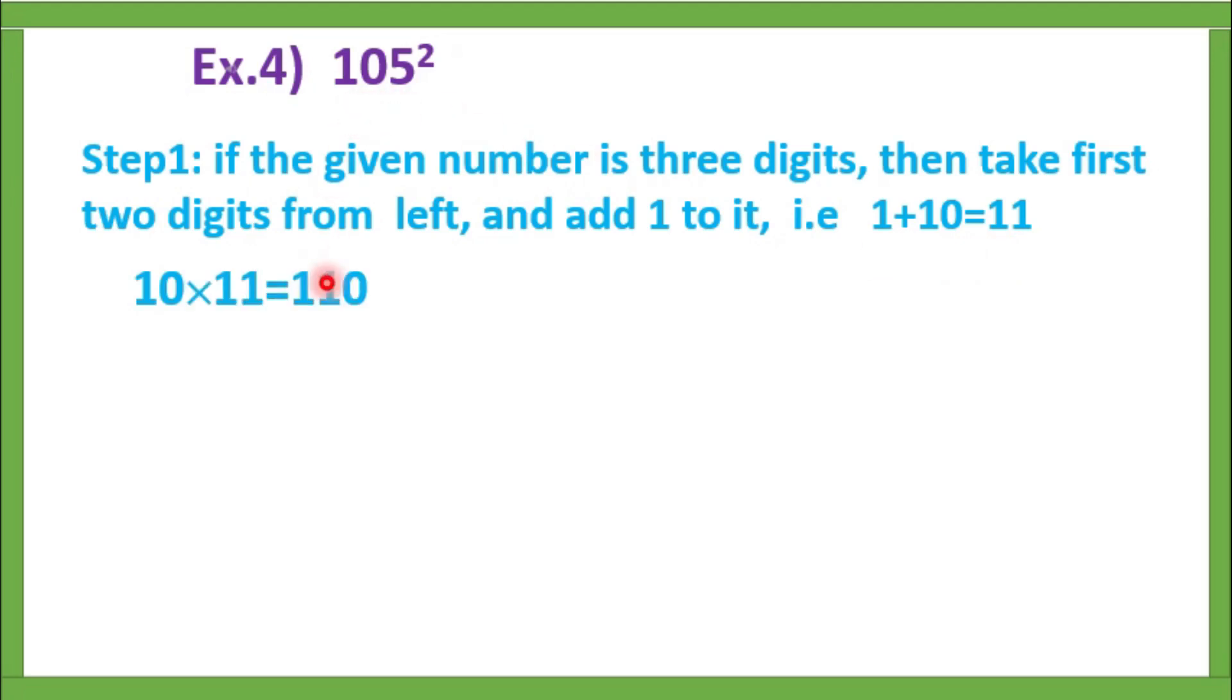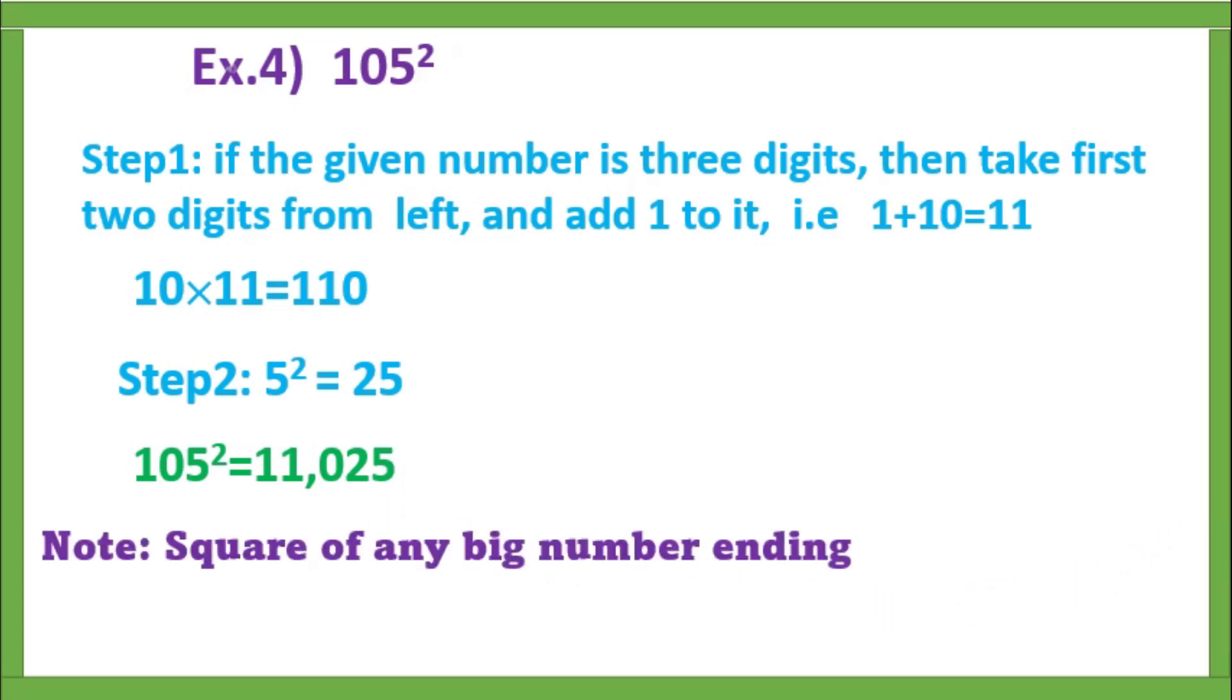And 5 square equals 25. So 105 square equals 11,025. By using this method you can find square of any big number ending with 5. Note: Square of any big number ending with 5 always ends with 25.